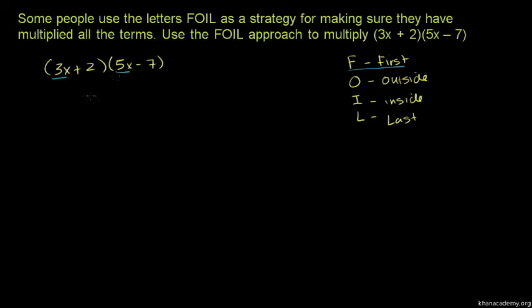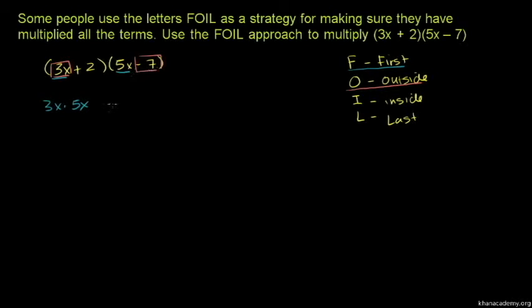So 3x times 5x — that's the first terms. You multiply the outside terms: outside terms are 3x and minus 7, so 3x times minus 7.